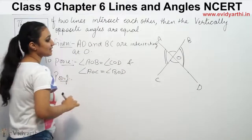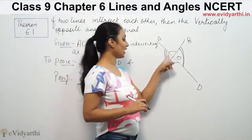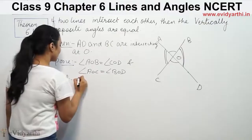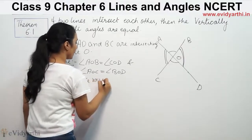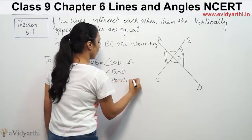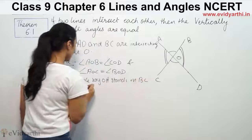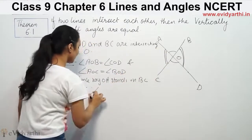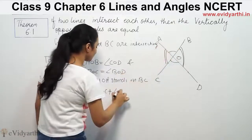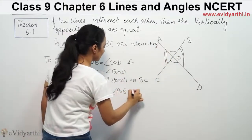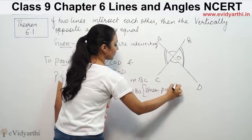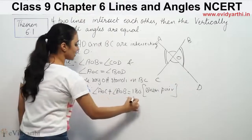Proof: Ray OA stands on BC. Since OA stands on BC, therefore angle AOC plus angle AOB is equal to 180 degrees. This is a linear pair. So we have our first equation.